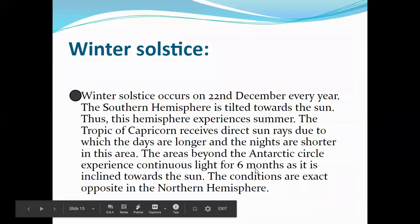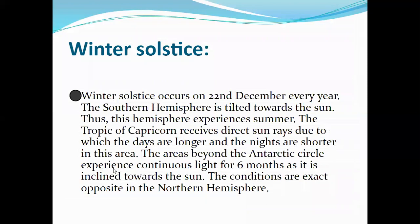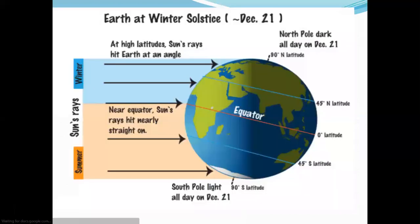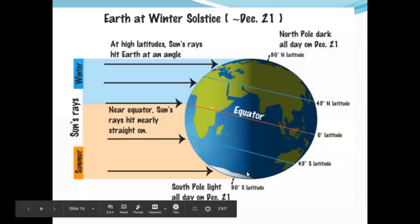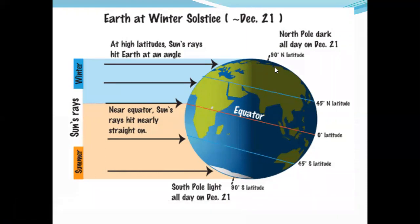The area beyond the Antarctic Circle experiences continuous light for six months, as it is inclined toward the Sun at this time. The conditions are exactly opposite in the northern hemisphere, where the days are shorter and nights are longer, and it is winter there.